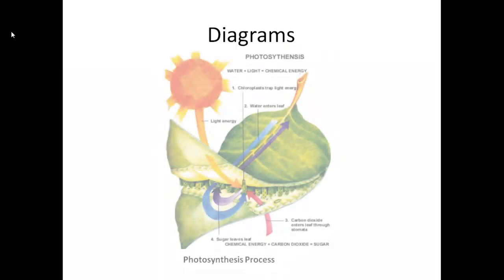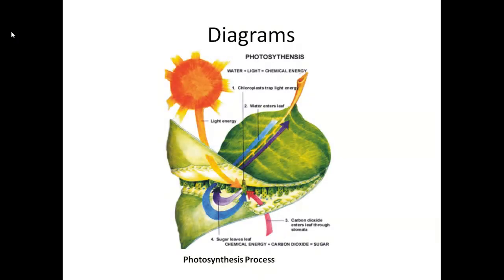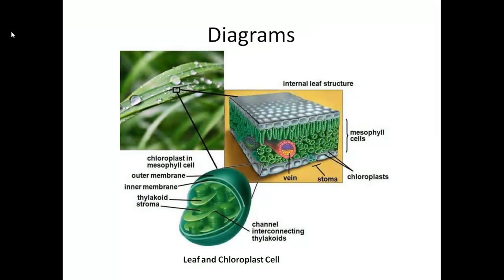This is a diagram of what the photosynthesis process is like. It takes water and light and combines them to make chemical energy. This diagram shows the chloroplast and its green coloration. As you can see from the internal leaf structure portion on the upper right, there are many chloroplasts that make up the cell.